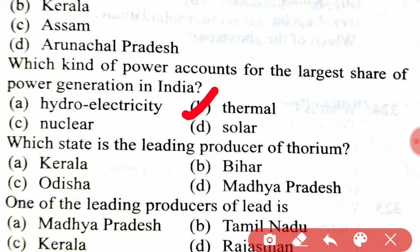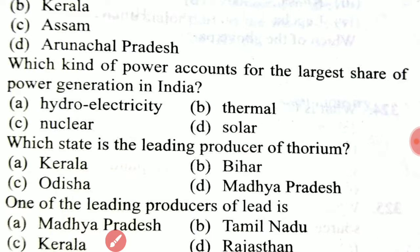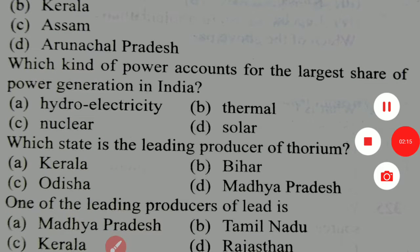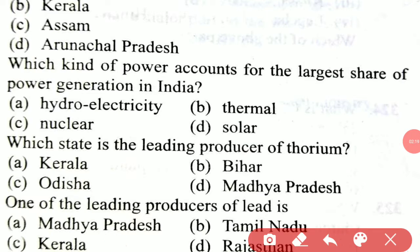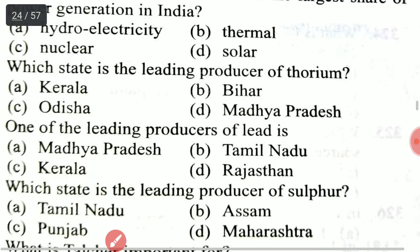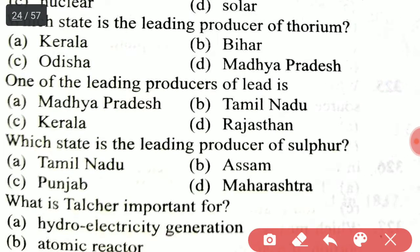Which kind of power accounts for the largest share of power generation in India? The right answer is option B, thermal. Thermal power accounts for the largest share of power generation in India. Next, which state is the largest producer of thorium? The right option is option A, Kerala.